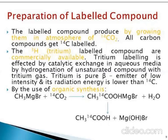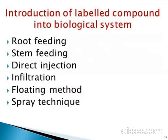Tritium labeling is effected by catalytic exchange in aqueous media, exchange hydrogenation, or catalytic hydrogenation of unsaturated compounds with tritium gas. For the introduction of labeled compounds into plants, the following six methods are used: root feeding, stem feeding, direct injection, infiltration, floating methods, and spray techniques.